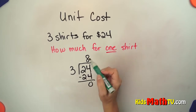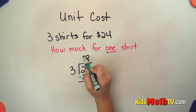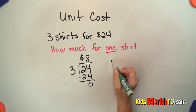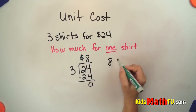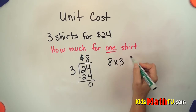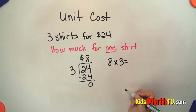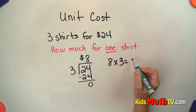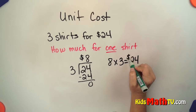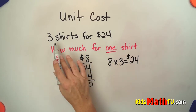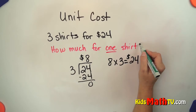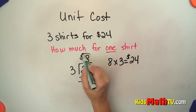Subtracting you get zero. So each shirt costs $8. We can check that — if one shirt costs $8, we can multiply eight times three to see how much we get. Eight times three is 24. So if there are three shirts for $24, you know that one shirt will cost $8. That's the end of the lesson on unit cost.